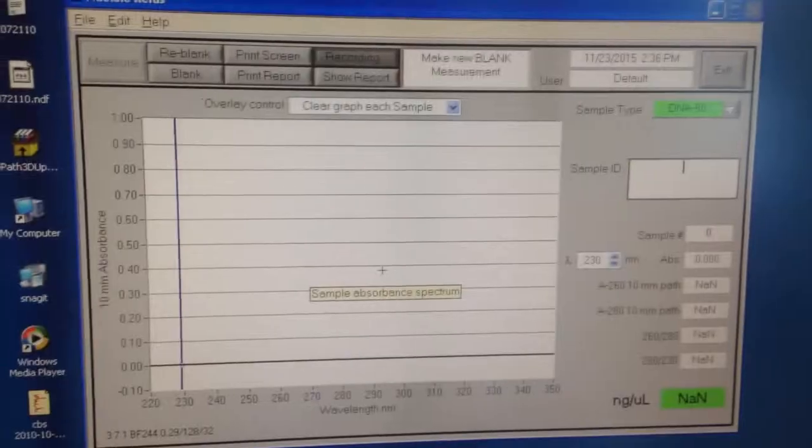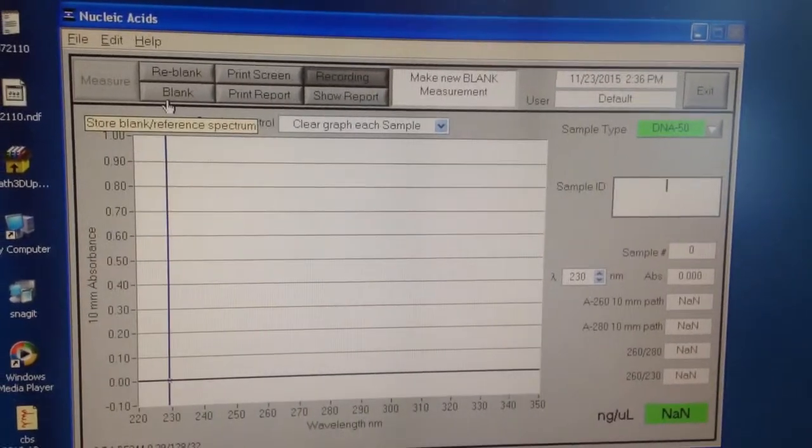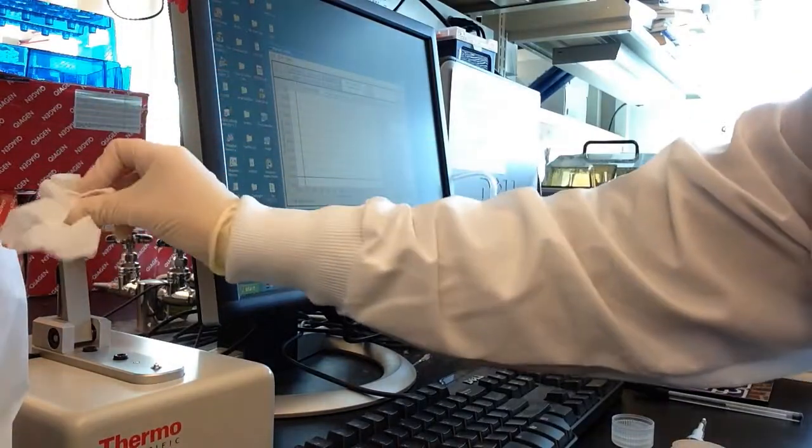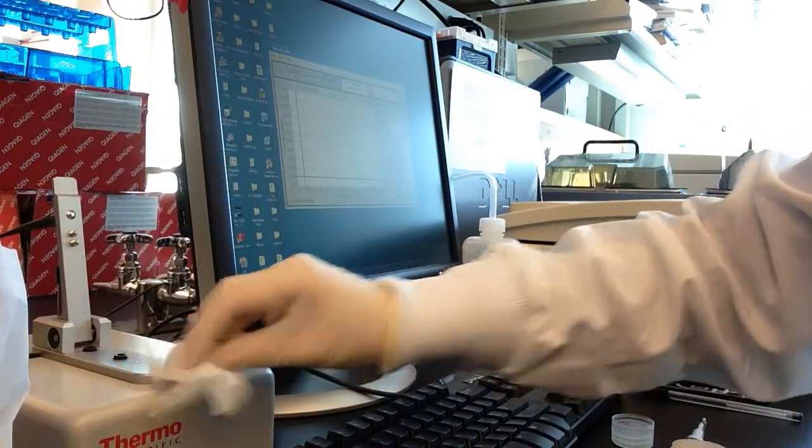Next, you'll want to blank the machine similar to the way that you blanked the big spec. You will have to wipe down the pedestals with Kimwipes again.